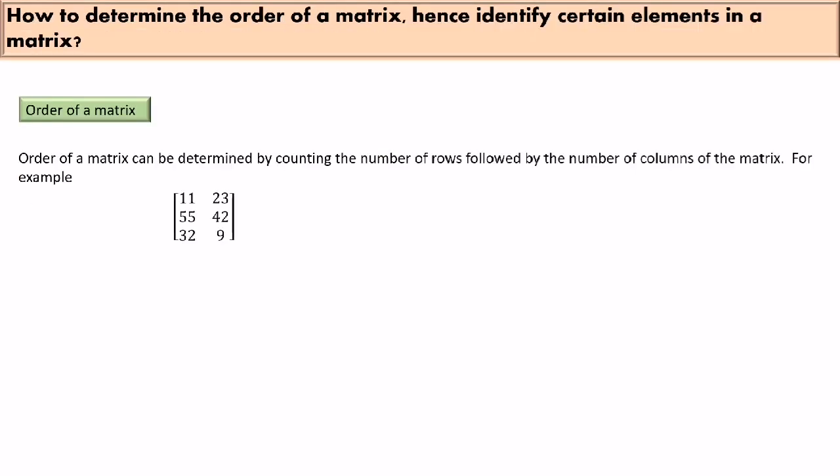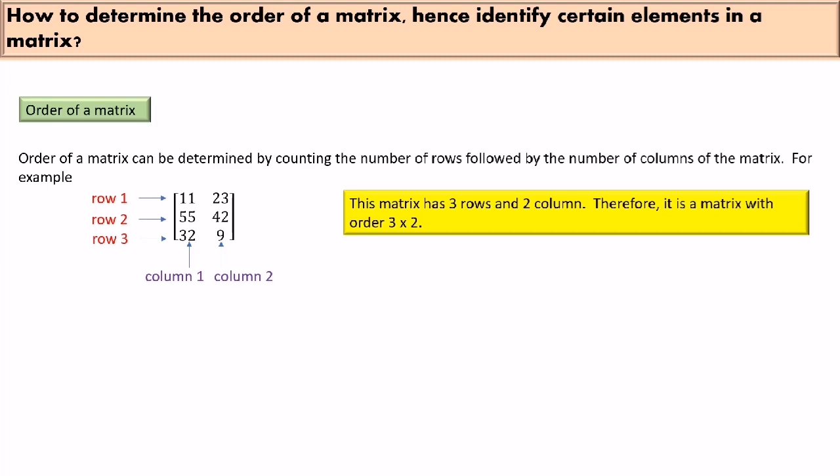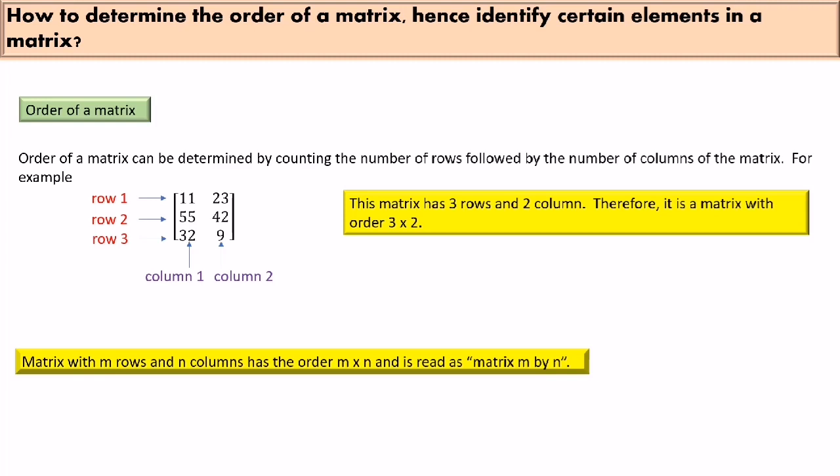After learning how to represent information in matrix form, we now learn what is the order of a matrix. The order of a matrix is determined by counting the number of rows followed by the number of columns. For example, a matrix with 3 rows and 2 columns has order 3 by 2. A matrix with m rows and n columns has order m by n, read as 'm by n'.